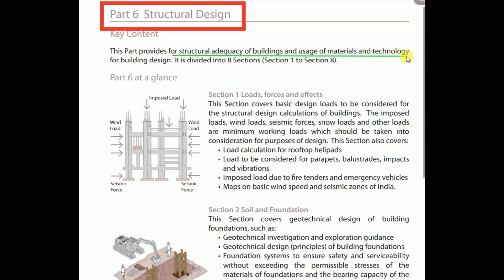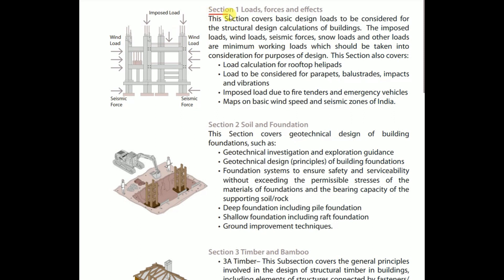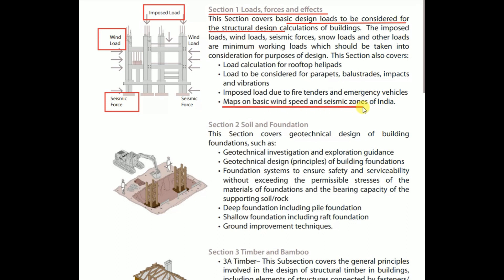Part 6 is divided into eight sections — Sections 1 to 8. Section 1 covers loads, forces and effects. It covers basic design loads to be considered for structural design calculations of buildings — including imposed load, wind load, seismic force, snow loads, and other minimum working loads. It also covers load calculations for rooftop helipad loads, parapets, balustrades, impacts and vibrations, imposed loads due to fire tenders and emergency vehicles, and maps on basic wind speed and seismic zones of India are given in the annexure.